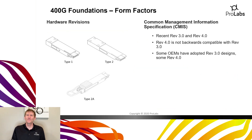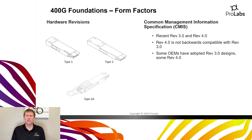Even within the QSFP-DD form factor there's still some variation — three different hardware types: Type-1, Type-2, and Type-2A. Type-2 is perhaps the most commonly deployed today; it protrudes a bit further out from the faceplate than Type-1, which is closer in size to the standard QSFP-28 100Gig transceiver. Type-2A is a newer addition to address thermal management, expected to be used in relation to upcoming 400Gig ZR, and needs a heat sink on top.